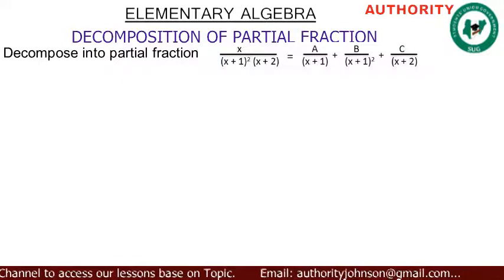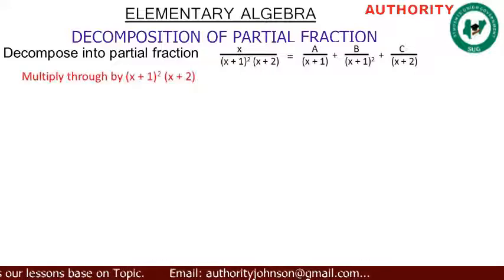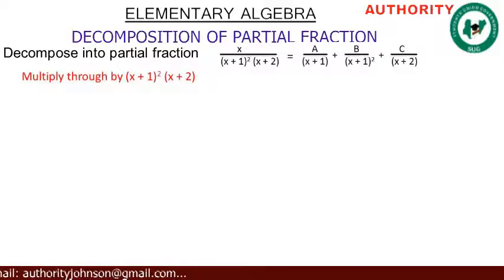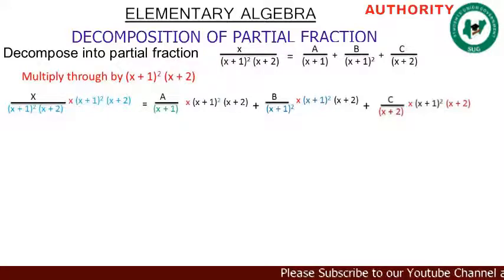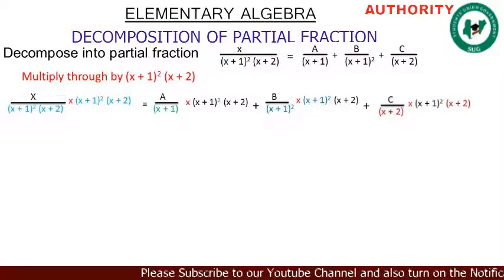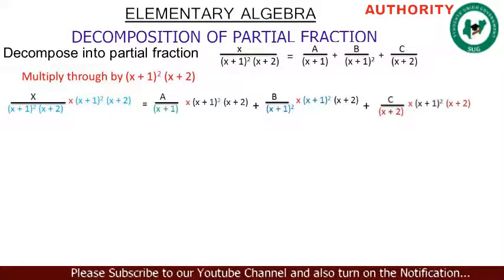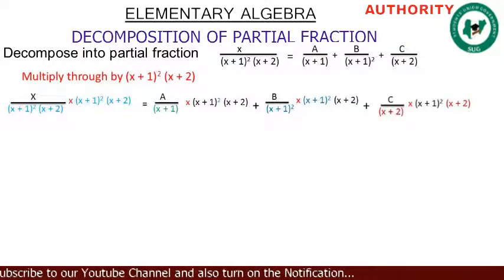Now we're going to multiply through by (x+1) squared times (x+2) — multiply everything on the left-hand side and the right-hand side. When you perform the operation on the left-hand side, the (x+1) squared cancels and the (x+2) cancels, so we'll be left with x.